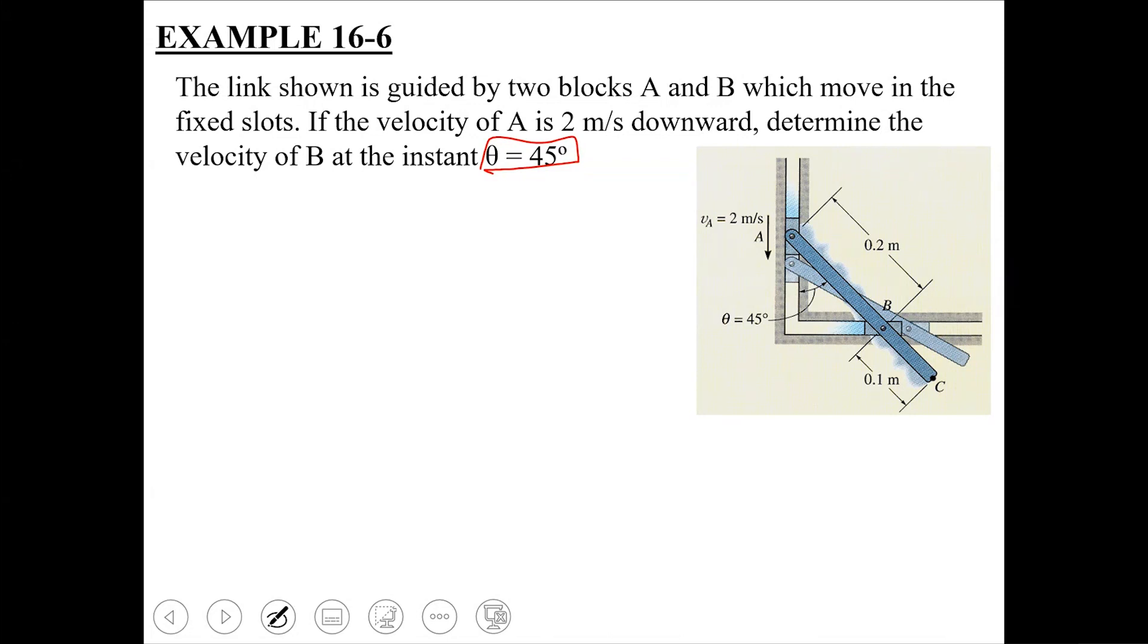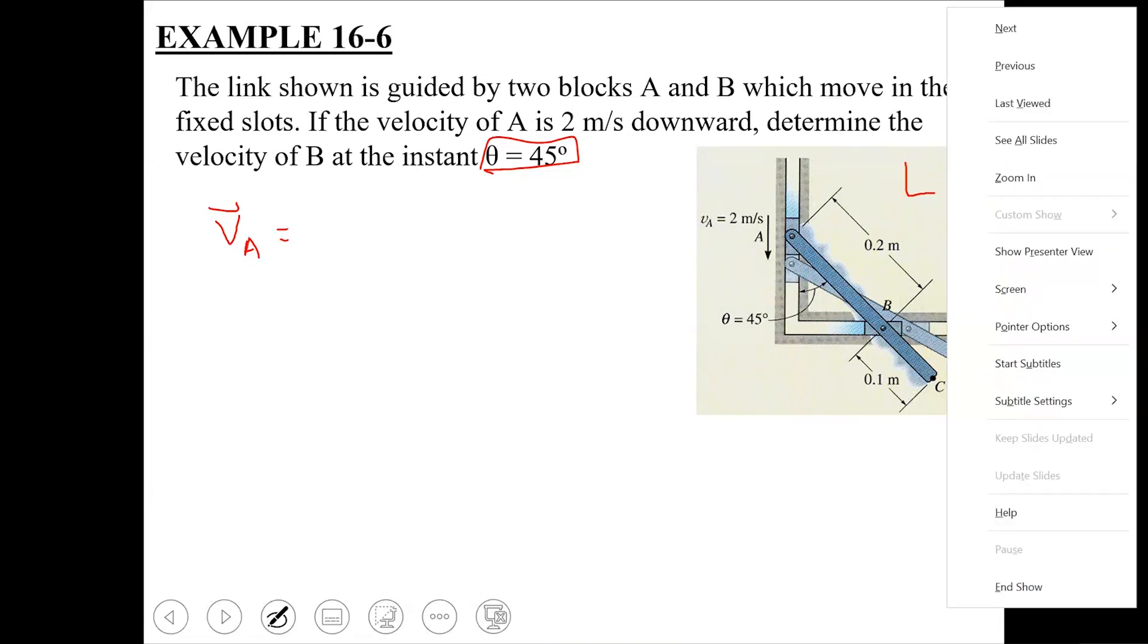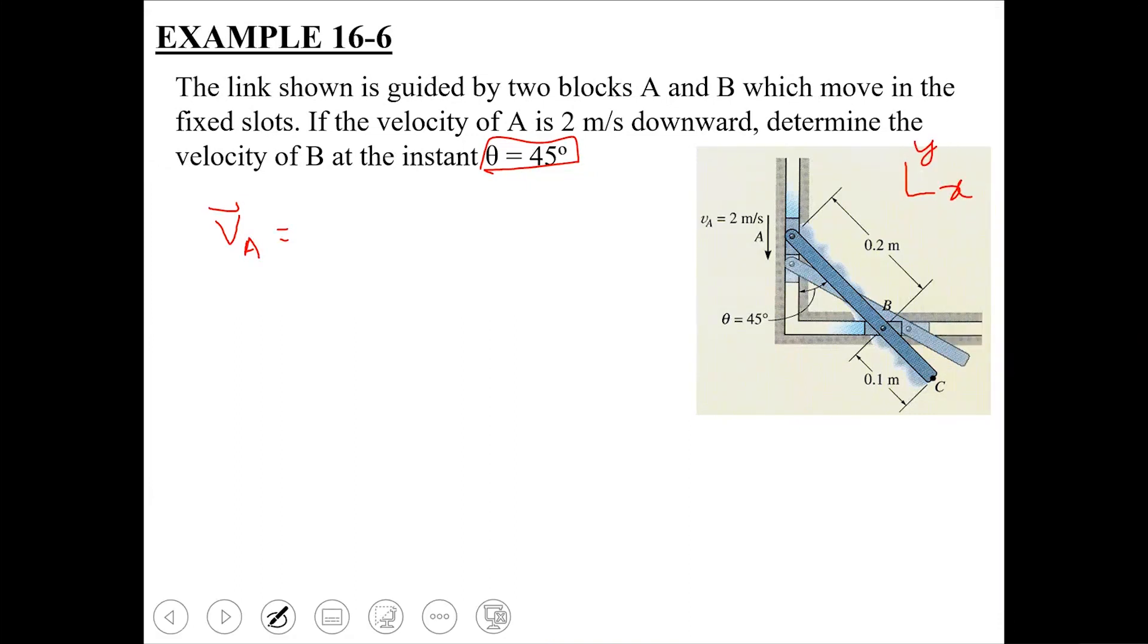Starting with the solution, because vectors are involved, first write these velocities in vector terms. Starting with velocity of A, what is the magnitude? The magnitude is 2 and since it is moving downward, this A is going to move along the y-axis, so we can write it as minus 2j meters per second.